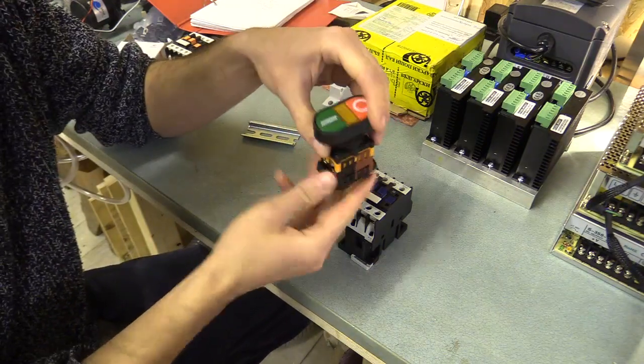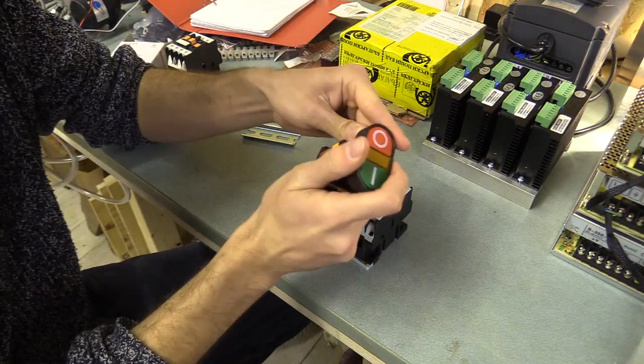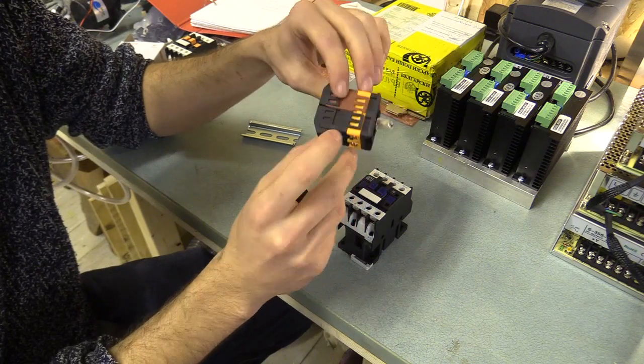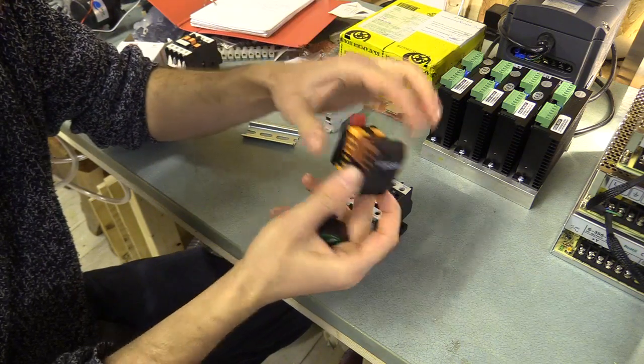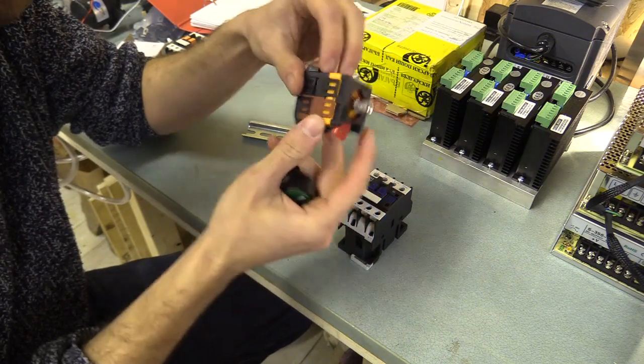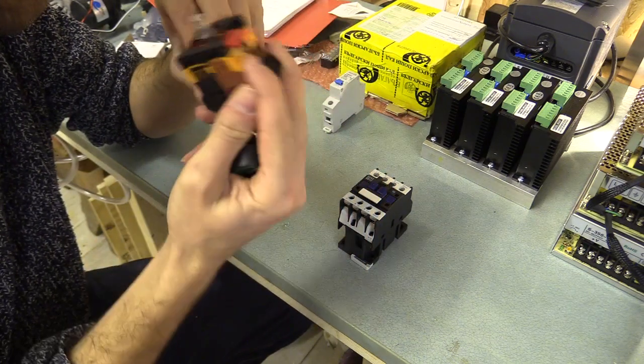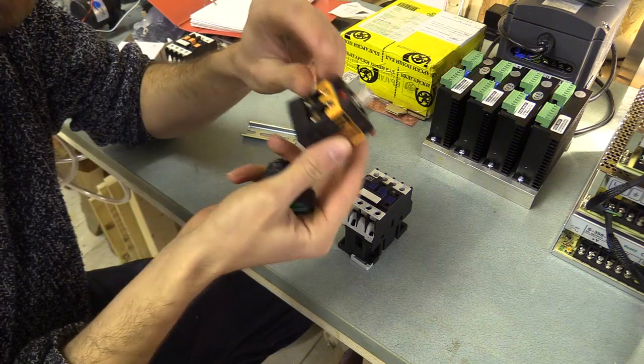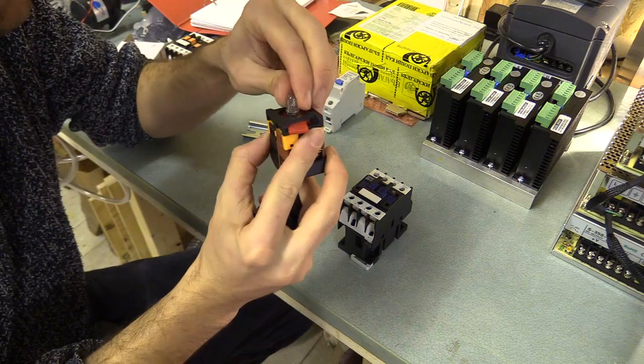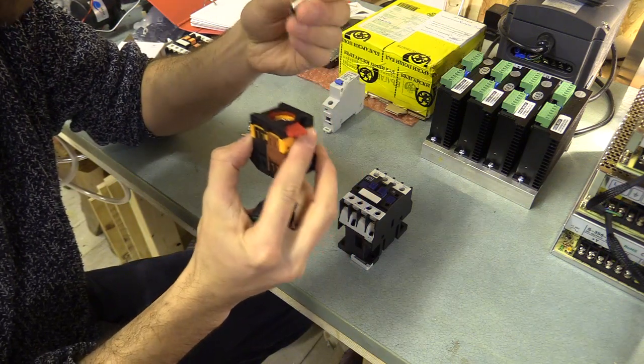So the thing to mention about the switch is it has one set of normally open, which is this side here, the brown one, and one set of normally closed contacts, as well as the contacts for the light, which is this thing here. Not sure how good this is.